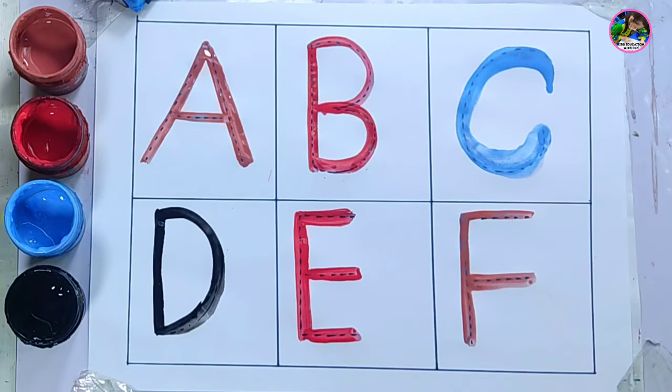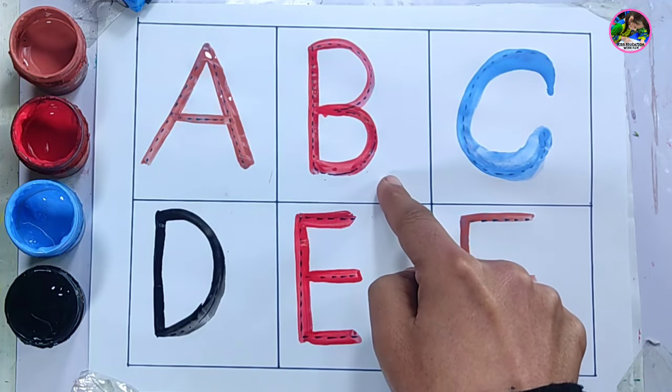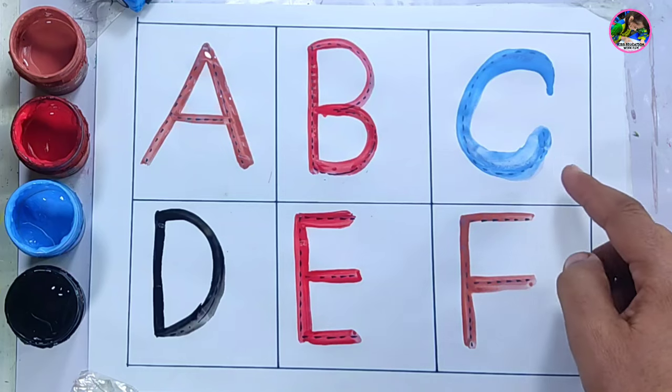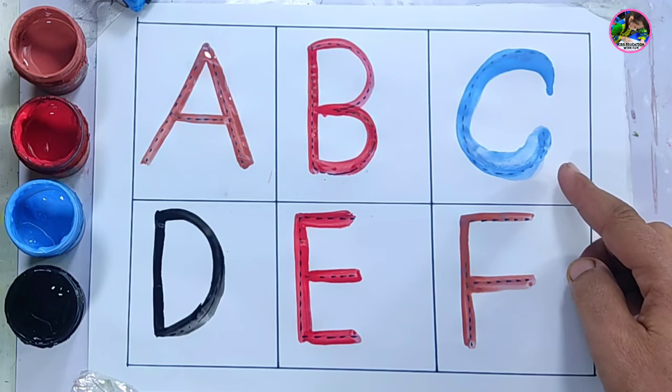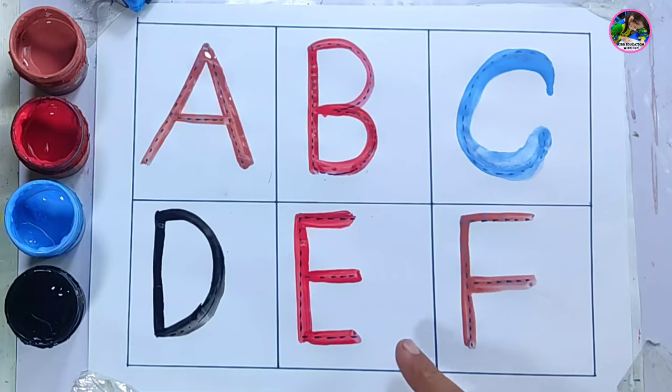Let's revise. A is for apple. B is for ball. C is for cat. D is for duck. E is for elephant. F is for fish.